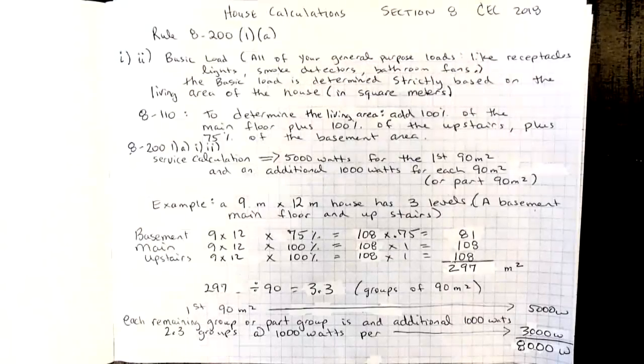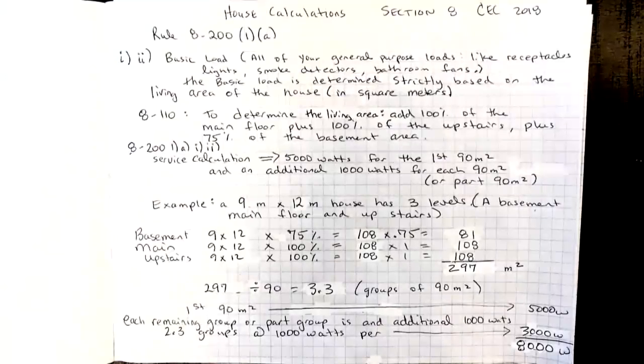My example is a 9 meter by 12 meter house. It has three levels, a basement, a main floor, and the upstairs. The basement, take 9 times 12, gives us 108 square meters. We take that at 75%. So I'm going to take 81 square meters towards the total living area.